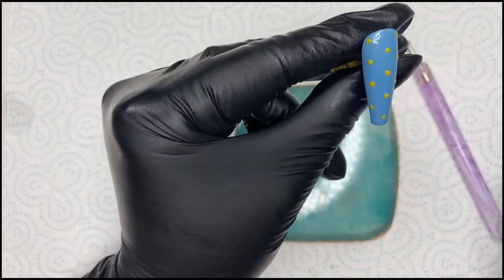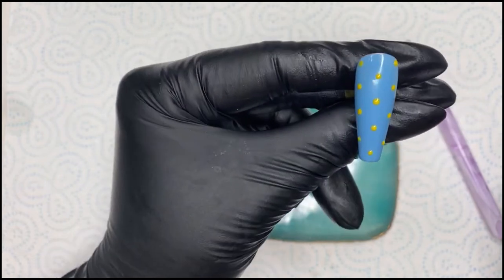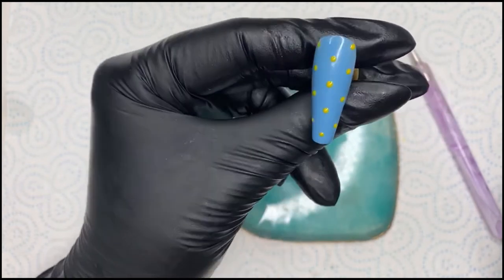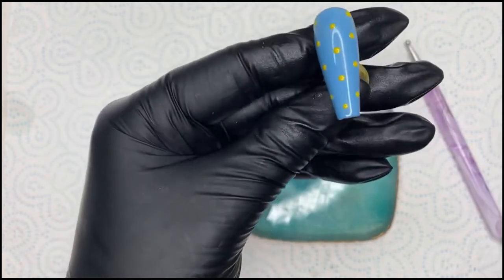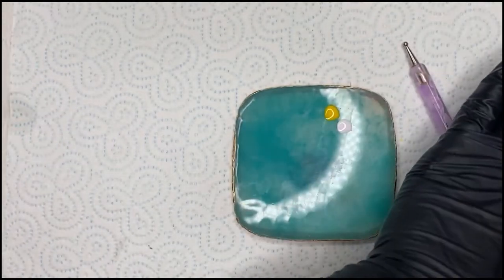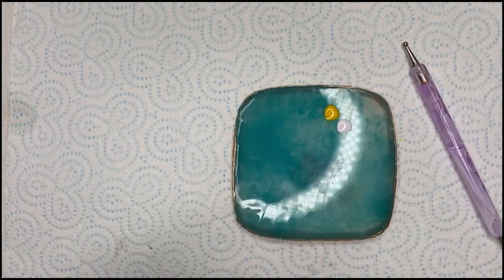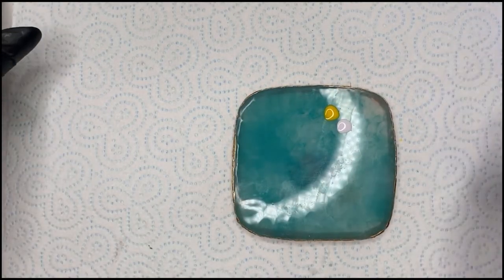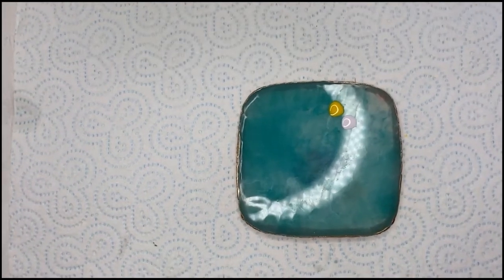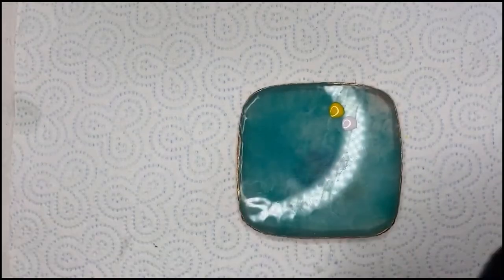So that's quite cute already. If you wanted to just do like a dotty nail, you could just have a dotty nail with whatever colors you wanted. I'm just going to flash cure that in the lamp for 10 seconds just to keep those yellow bits intact.